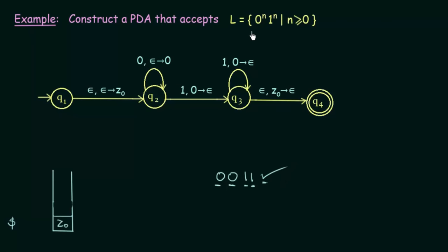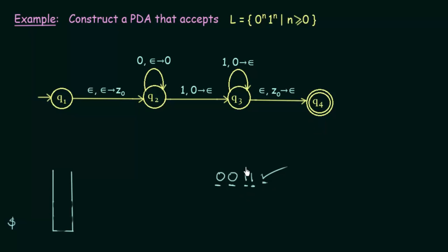There are two cases when a string is accepted by a pushdown automata: the first is when we reach a final state, and the second is when the stack is empty. In this example, we reached final state Q4 and Z0 was also popped — so the stack is empty. Both cases are true here: the string reached the final state and the stack was found to be empty.